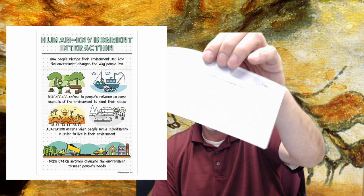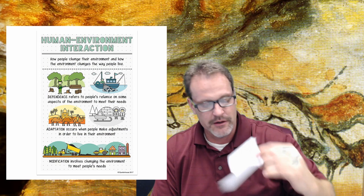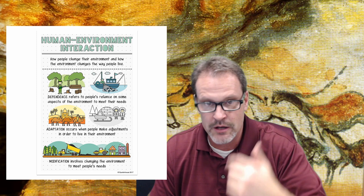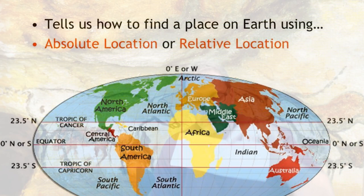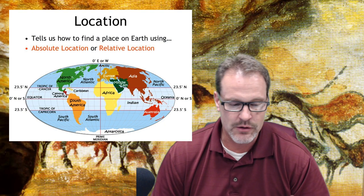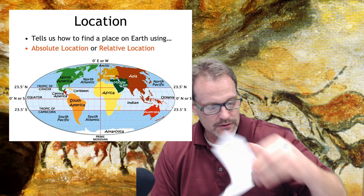The next theme of geography is how humans impact their environment — we call that human environment interaction. That means how humans basically affect the place that they live, like dams, fishing, mowing the lawn, watering things, irrigation. Looking at types of location: are you relatively somewhere or are you exactly somewhere? Exact location would be your address or coordinates on a map. If I'm close to Walmart, that's a relative location.